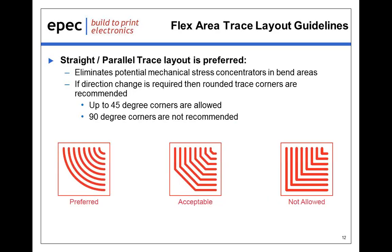Another significant element is the configuration of the traces in the flex area. The standard recommendation is that the traces be run in a straight line from one rigid area to another, parallel to one another, without any changes in direction if at all possible. By doing so, you eliminate any potential mechanical stress concentrators that could be created in these bend areas. If a change in direction is required, we definitely recommend that the trace corners be configured in a rounded shape. Utilizing 45 degrees is allowed, but using 90 degrees is definitely not recommended.